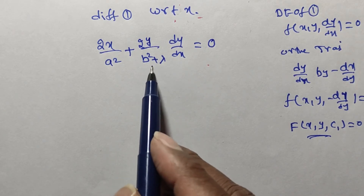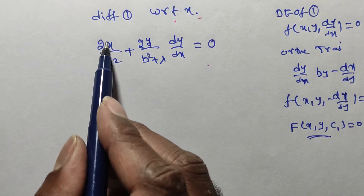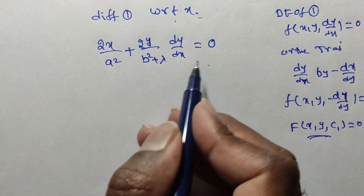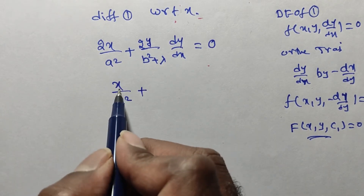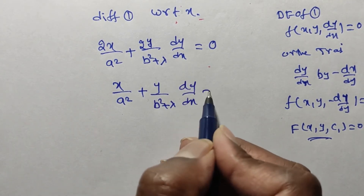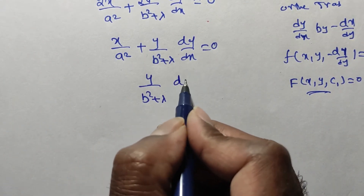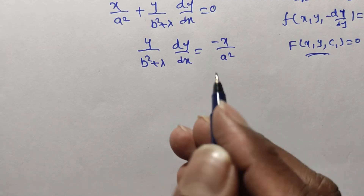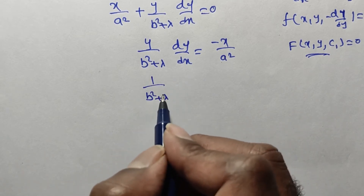We need to eliminate λ. Simplifying and dividing through by 2, we get: x/a² + y/(b² + λ) · dy/dx = 0. From this, y/(b² + λ) · dy/dx = −x/a². We want the term 1/(b² + λ), so rearranging: 1/(b² + λ) = −x/(a² · y) · dx/dy.